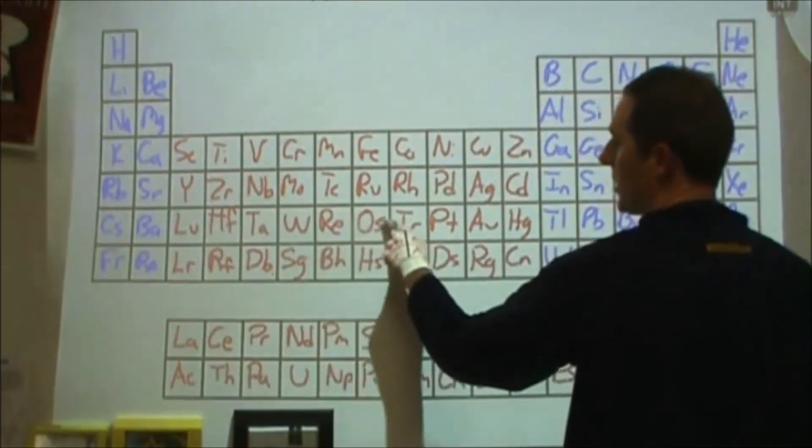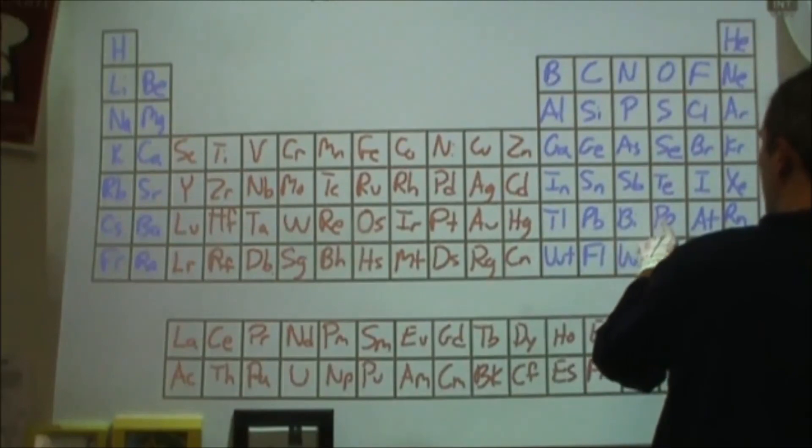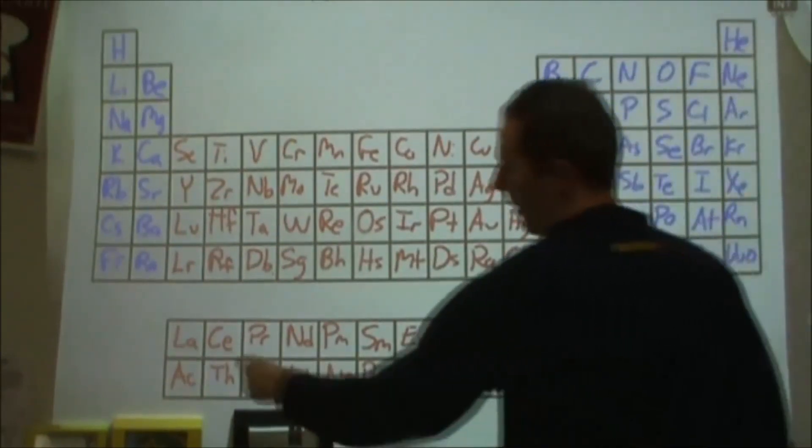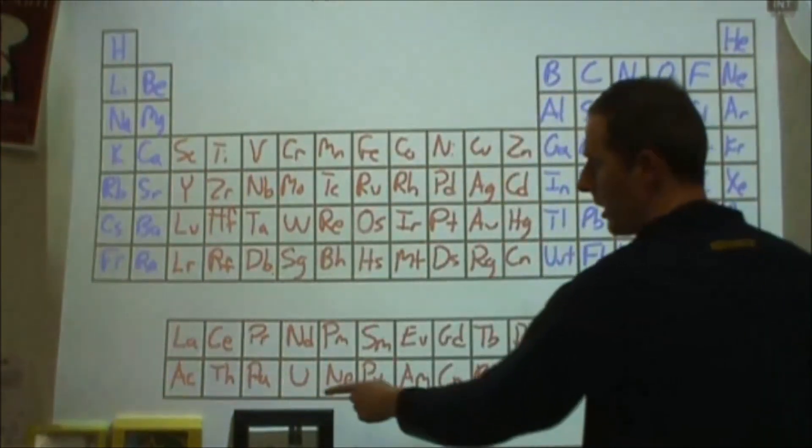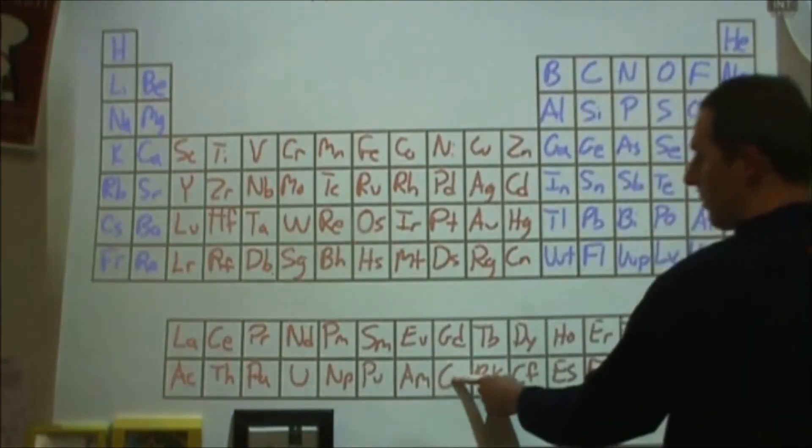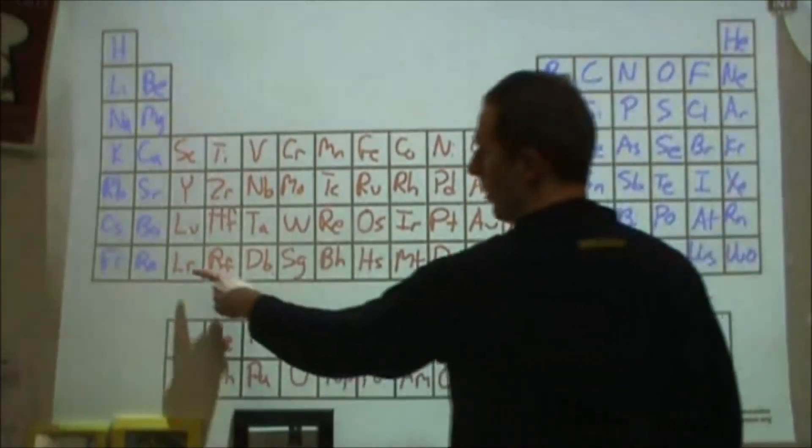Lutetium, hafnium, tantalum, tungsten, rhenium, osmium, iridium, platinum, gold, mercury, thallium, lead, bismuth, polonium, astatine, radon, francium, radium, actinium, thorium, protactinium, uranium, neptunium, plutonium, americium, curium, berkelium, californium, einsteinium, fermium, mendelevium, nobelium.